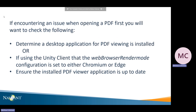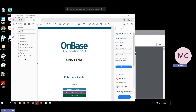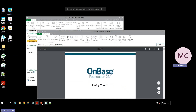Ensure the installed PDF viewer application is up to date. When using Adobe PDF Viewer, if the error occurs — 'There is a problem with Adobe Acrobat Reader. If it is running, please exit and try again' — it is recommended that Protected Mode is disabled and the client is relaunched. Those settings are found directly within the Adobe product under Edit, Preferences, Security Enhanced, Enable Enhanced Security. Uncheck it, click OK, and relaunch the Unity client.